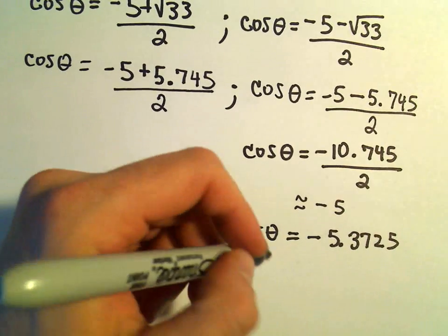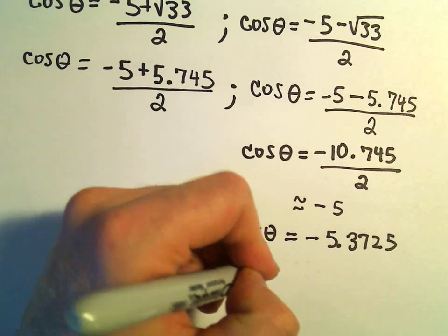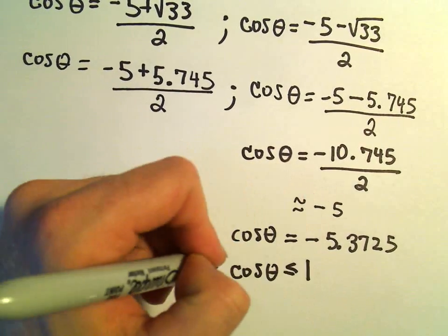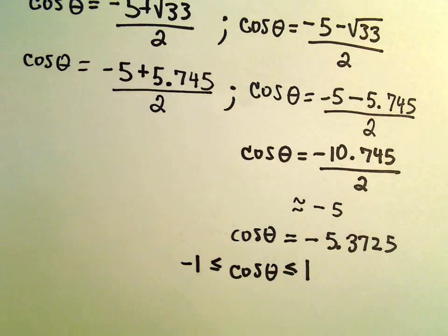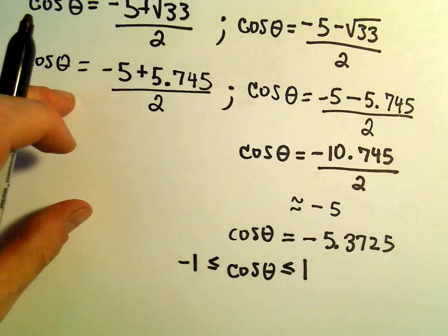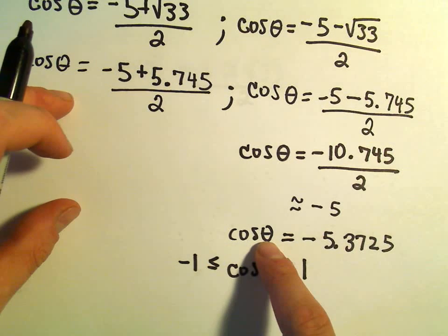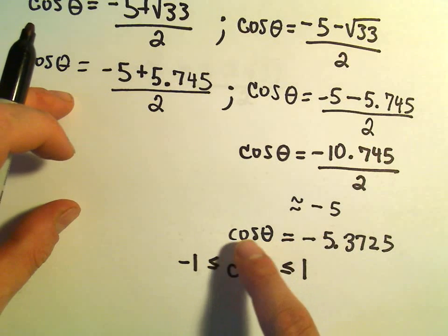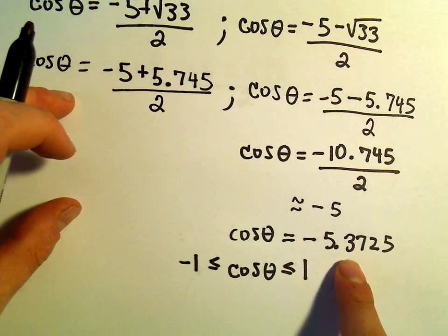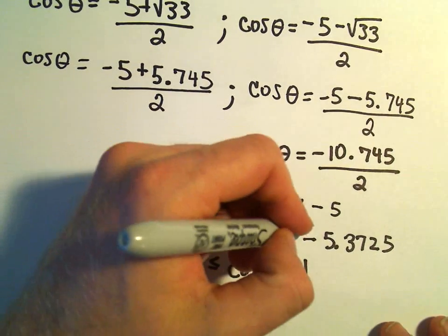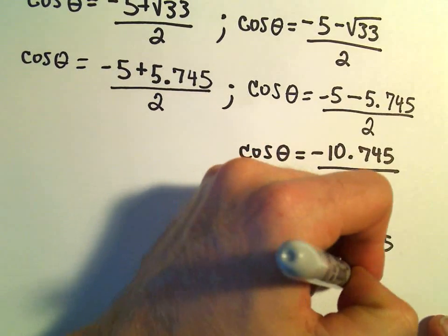But recall, cosine of anything is in between positive 1 and negative 1. That's the range of cosine. So there's simply no value that you can plug in, there's nothing that you can let theta equal, so that cosine of that will equal negative 5.3725. So this equation simply has no solutions.